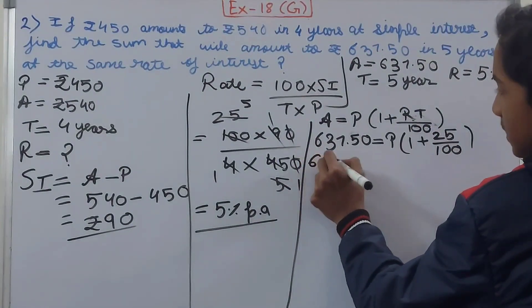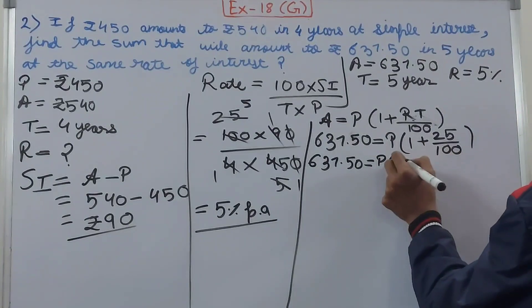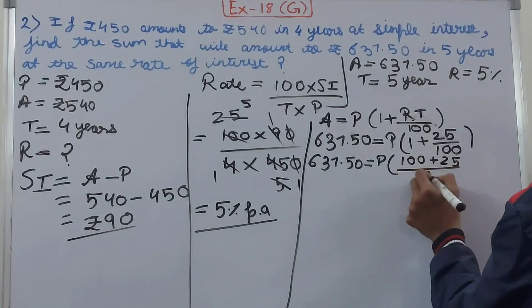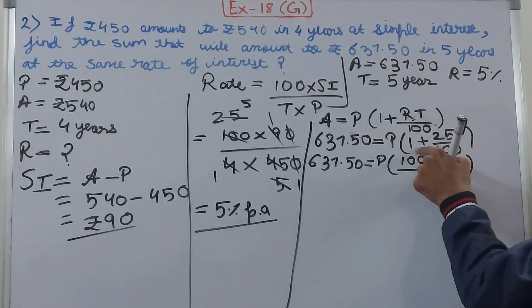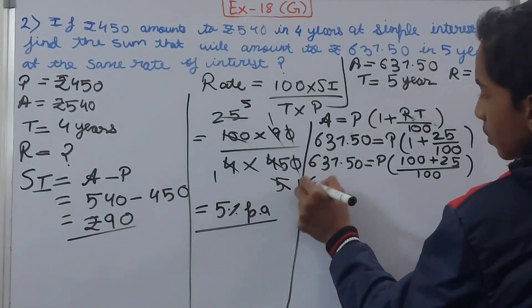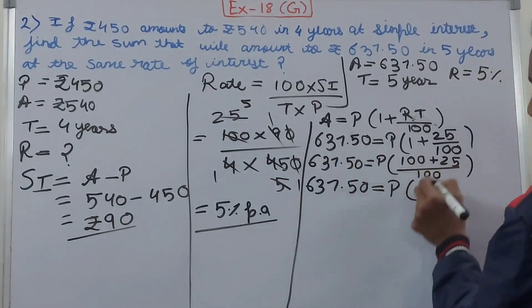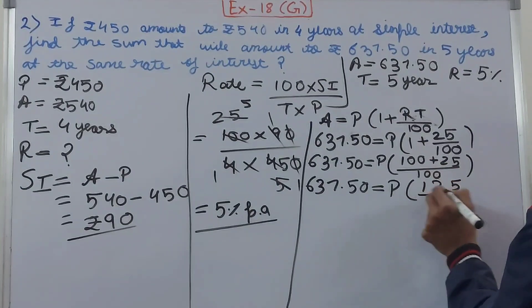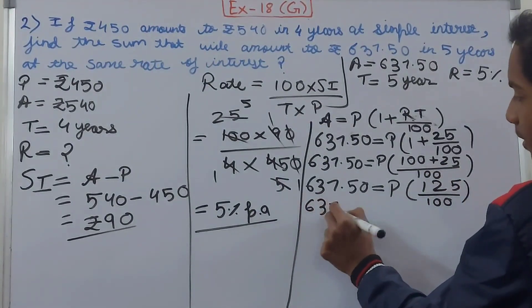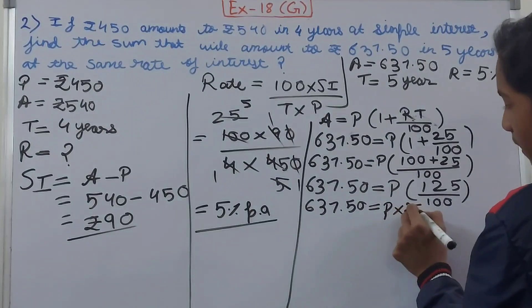So ₹637.50 equals to P in brackets. You can add this up. What will this become? 100 + 25 upon 100. LCM will be 100, so this will be multiplied. You can do the addition. So this becomes ₹637.50 equals to principle in brackets, 100 + 25 = 125 upon 100.